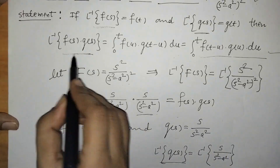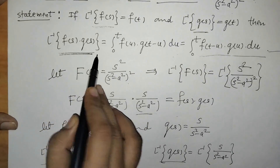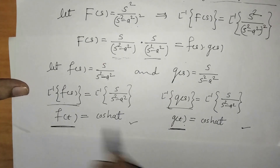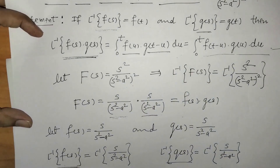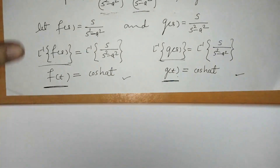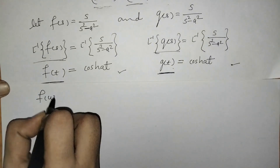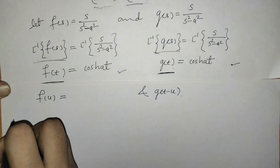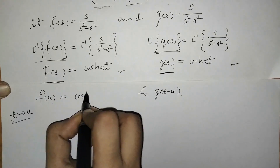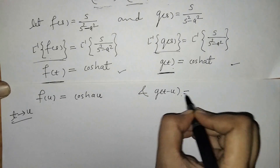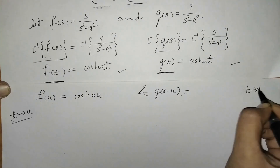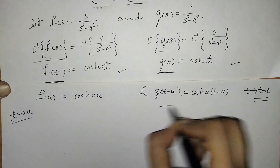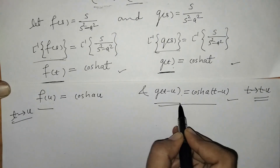Now we can find L⁻¹ of their product by using this integral. From f(t) and g(t), we have to find F(u) and G(t − u) so that we can apply the given integral. To find F(u), we replace t by u, so here we have cosh(Au). And for G(t − u), we replace t by t − u, so here we have cosh(A(t − u)).